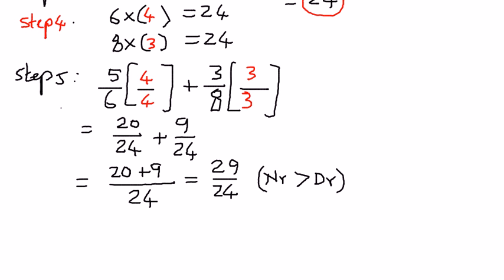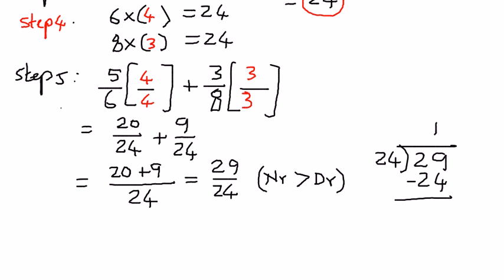When we have an improper fraction, we can express it as a mixed number. We're going to take 29 and divide it by 24. 24 times 1 is 24, and when we subtract that we get 5. So 29 divided by 24 is equal to 1 and 5 over 24.